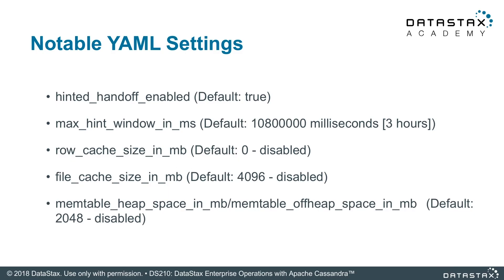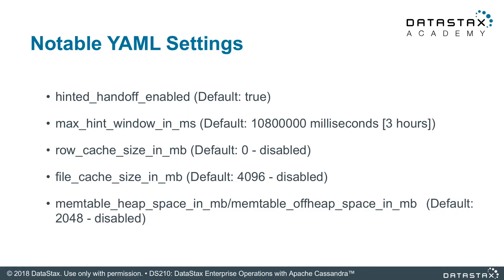If you want to enable hinted handoffs, you flip the switch in this setting — it's on by default. Next is max hint window in milliseconds, which is how long hints will be stored for a dead node; the default is three hours. Then there's row cache size in megabits, which is the maximum size of the row cache in memory, set to zero by default. File cache size in megabits is next — the maximum memory to use when pooling SSTable buffers. And finally, memtable heap space in megabits and memtable off-heap space in megabits, which is the total on-heap and off-heap allowance for memtables.